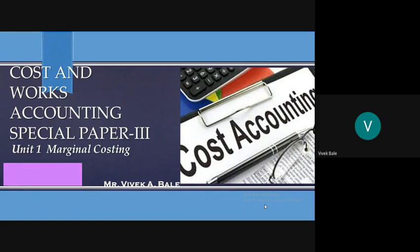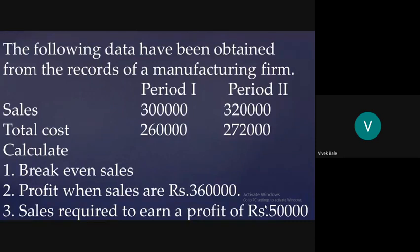Now let's move to the question. The data has been obtained from the records of a manufacturing firm. The data regarding two periods is given: sales for Period 1 is ₹3 lakh, for Period 2 is ₹3 lakh 20 thousand. Total cost for Period 1 is ₹2 lakh 60 thousand, and for Period 2 is ₹2 lakh 72 thousand. We are asked to calculate: (1) breakeven sales, (2) profit when sales are ₹3 lakh 60 thousand, and (3) sales required to earn a profit of ₹50,000. Since the information is different, we need to use different formulas to calculate the breakeven point as well as profit and sales.